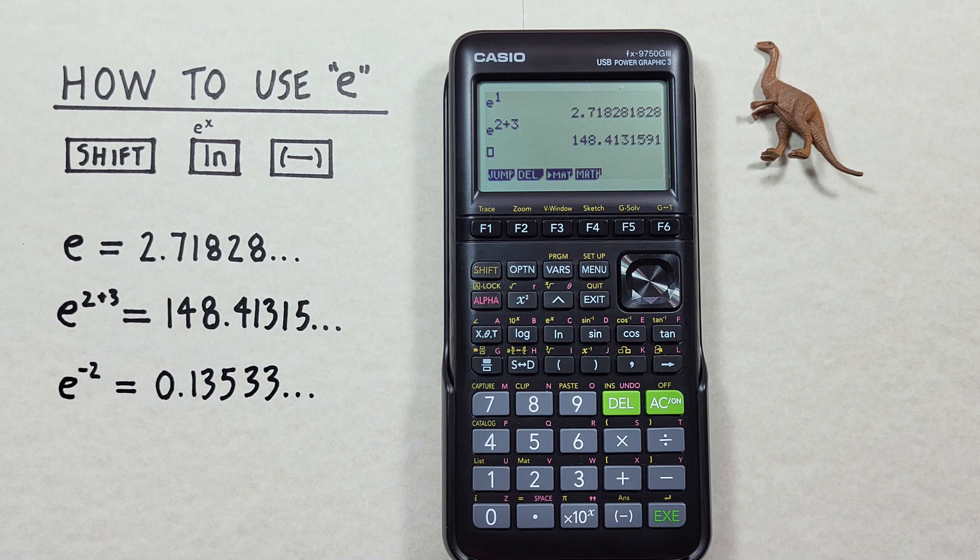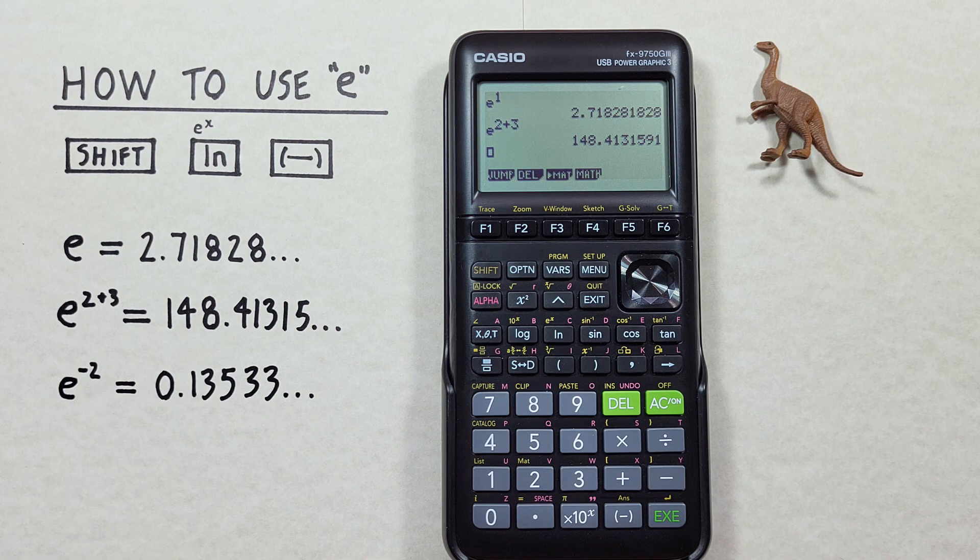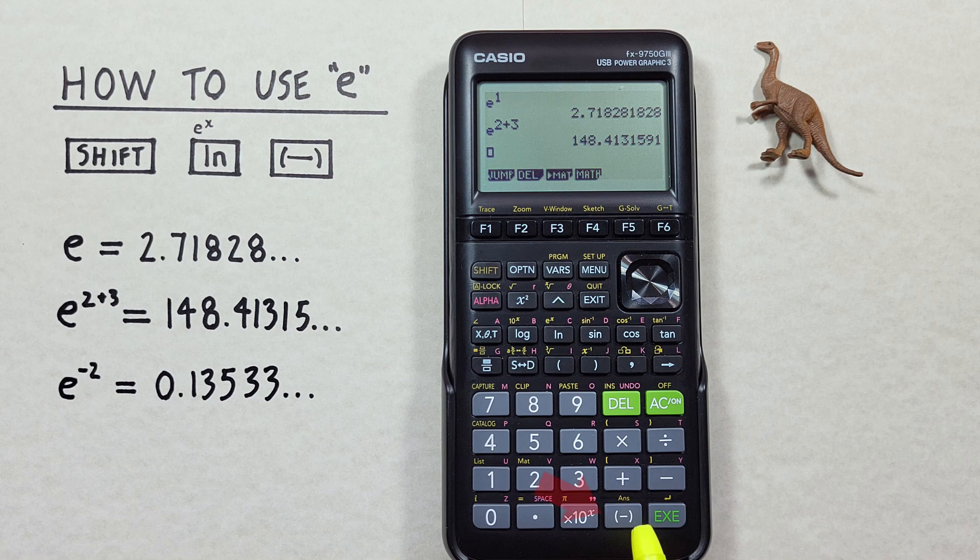What if we want to find an exponent that's a negative number, like for example E to the power of negative 2? For that, we need to use the negative key down here.